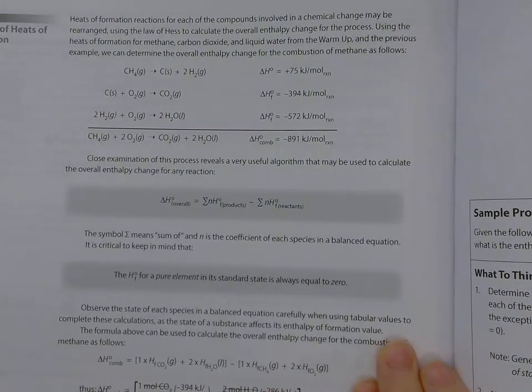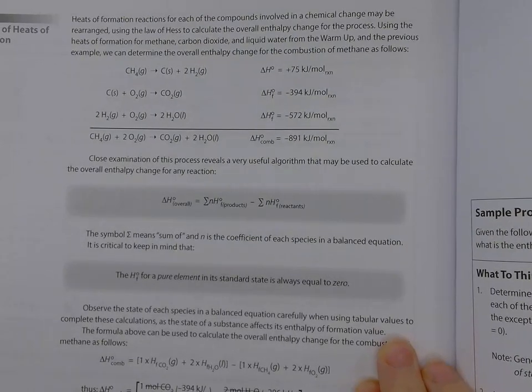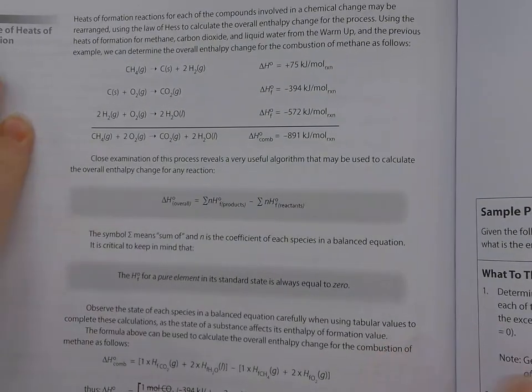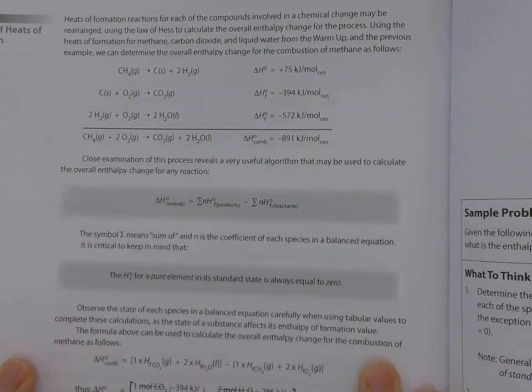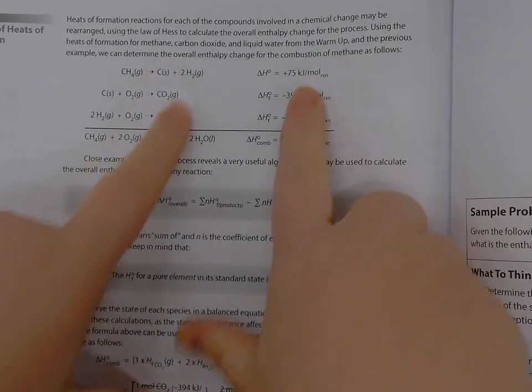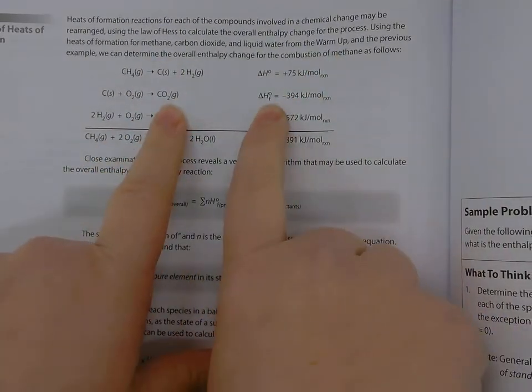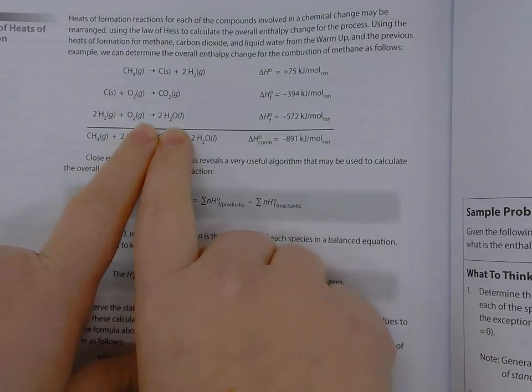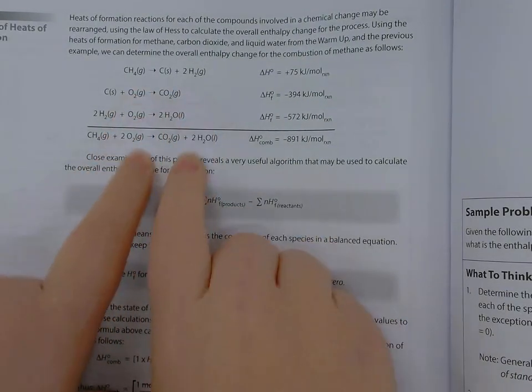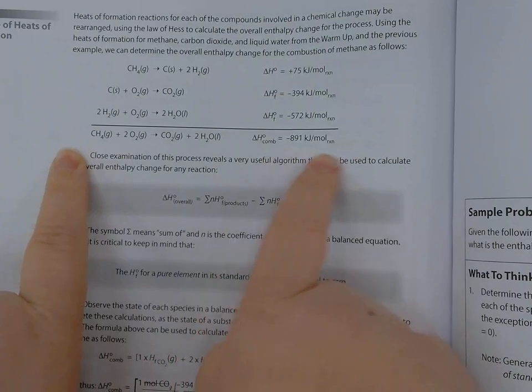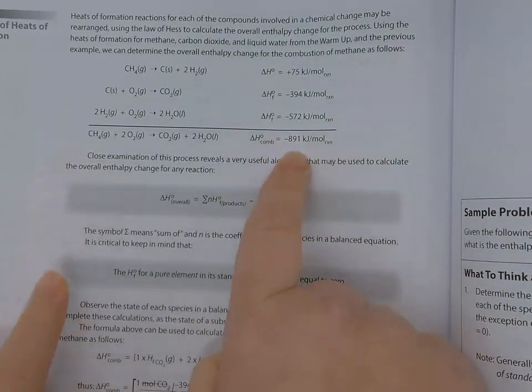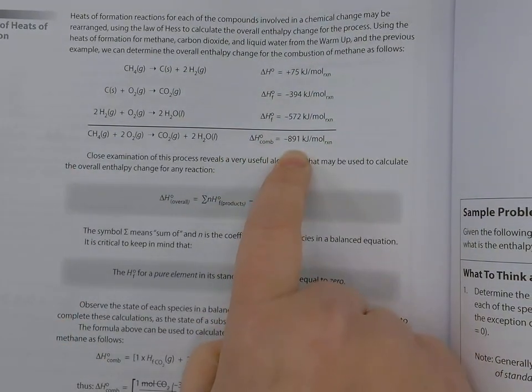All right guys, so you have taken a look and done your reading guide for this section. Hopefully you've seen that we can use the change in enthalpy of formation of chemicals and add up their reactions to get an overall reaction and still use Hess's Law to find our total enthalpy of the reaction.